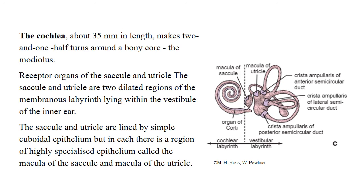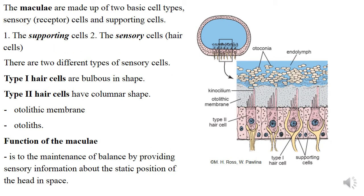The cochlea is about 35 mm in length and makes 2.5 turns around the bony core modiolus. Cochlea contains receptor organs, presented by the saccule and utricle, which are dilated regions of the membranous labyrinth. Saccule and utricle are lined by simple cuboidal epithelium, and each has a region with highly specialized epithelium called the macula of saccule and macula of utricle. Maculae are receptors detecting gravity and linear acceleration, consisting of two types of cells: vestibular hair cells and supporting cells.